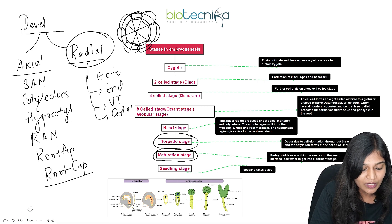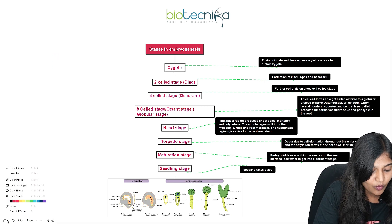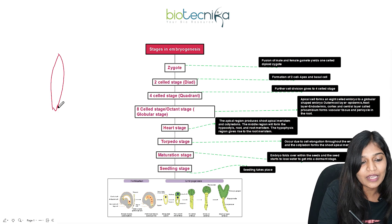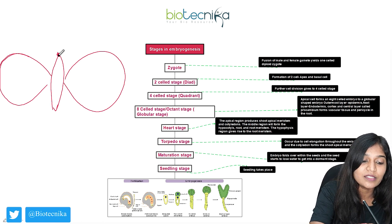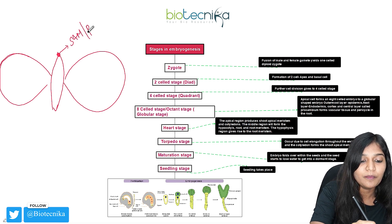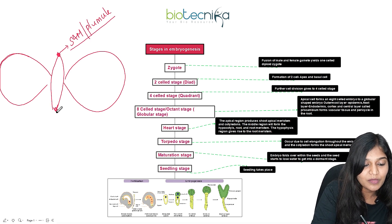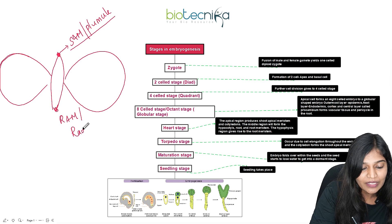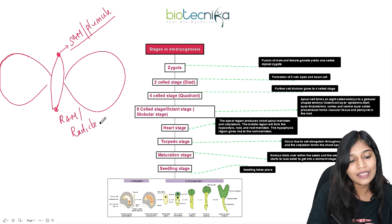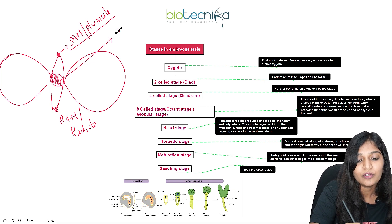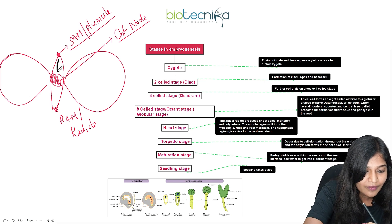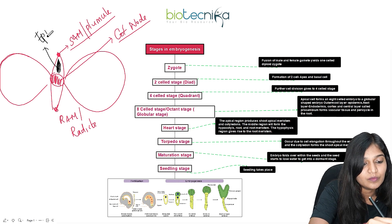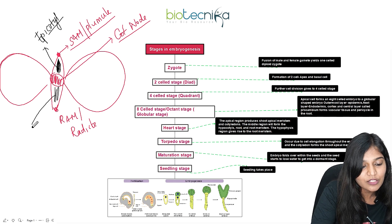Looking at a dicot embryo structure: it has an embryonal axis with two cotyledons. The apex of the heart stage gives rise to the shoot apical meristem called plumule, from which the stem arises. The root apical meristem is called the radicle, which gives rise to the root. The central part is the cotyledonary node, from which the two cotyledons arise. The region above the cotyledons is the epicotyl, and the region beneath the cotyledonary node is the hypocotyl.